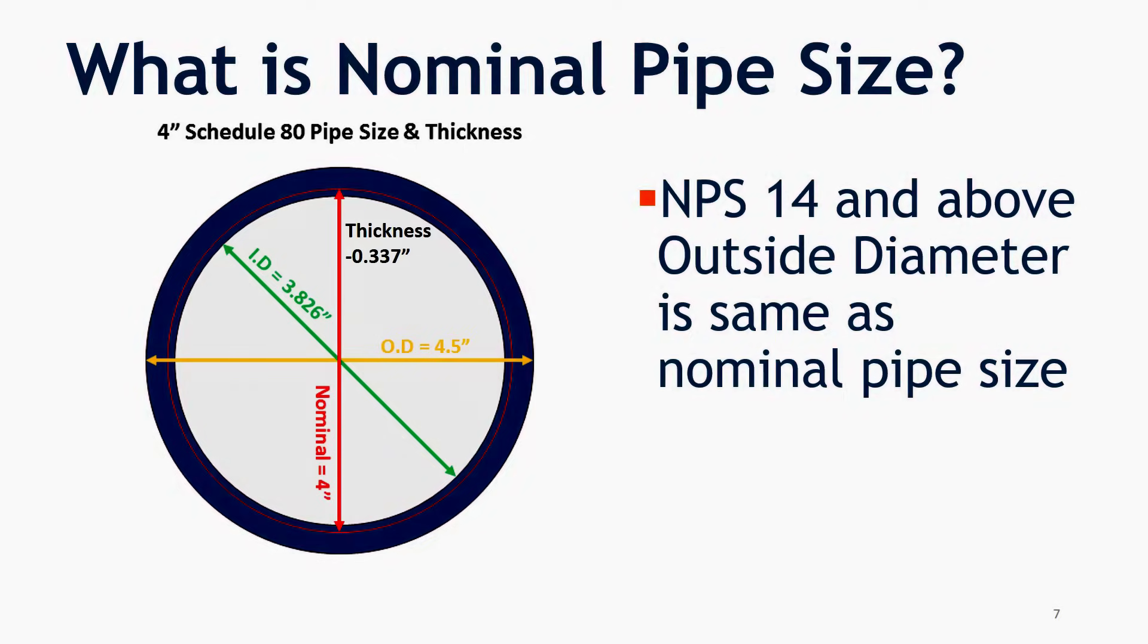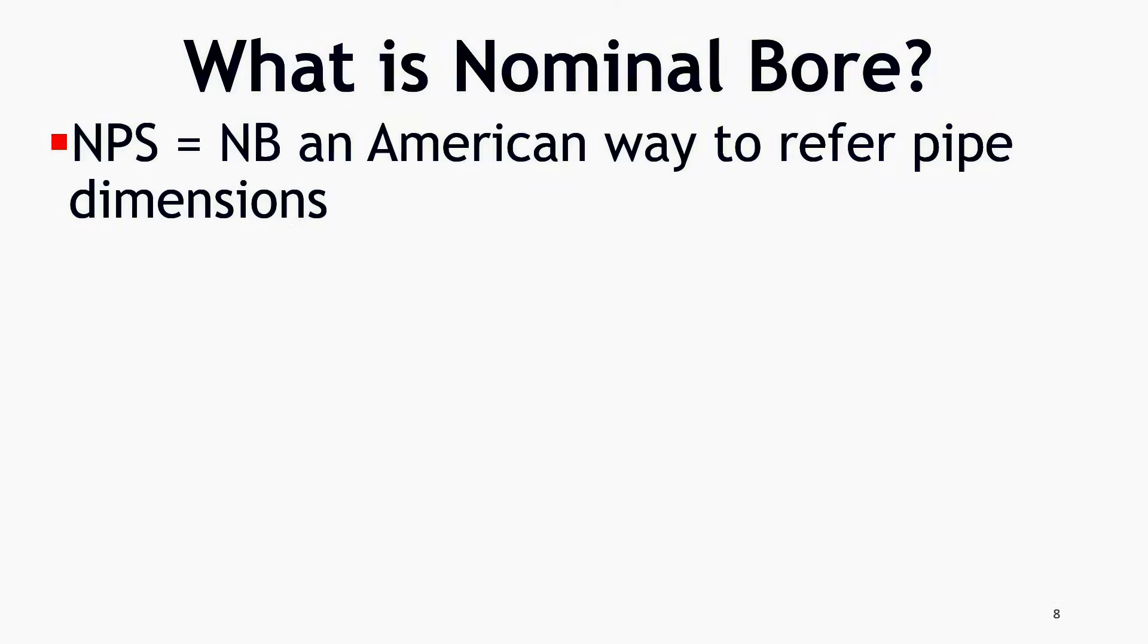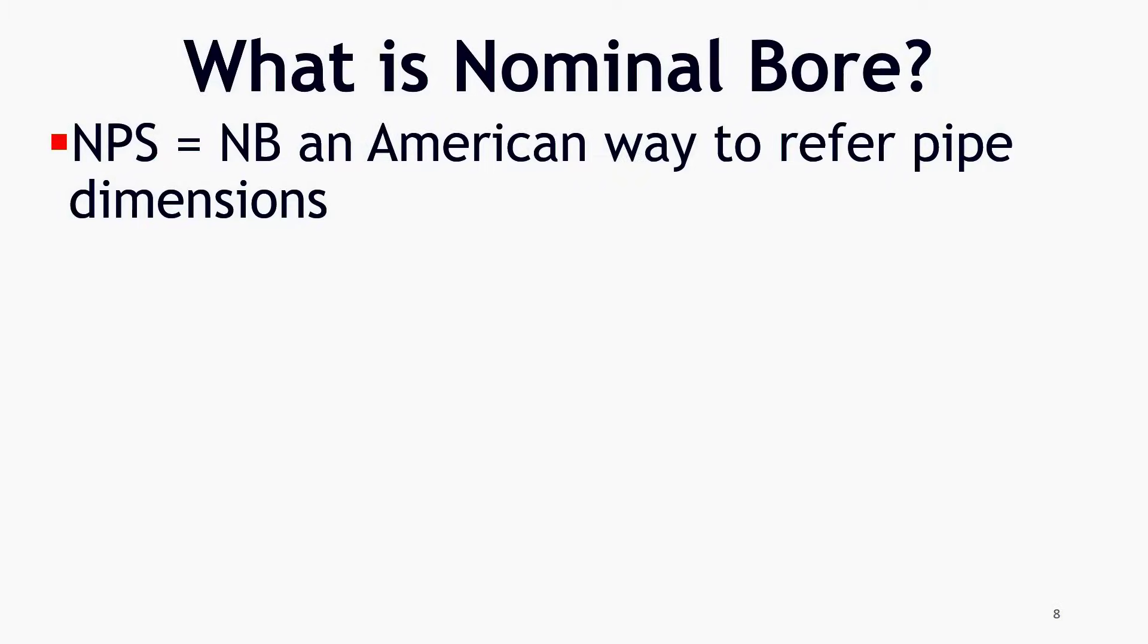What is nominal bore? NPS is frequently referred as NB or nominal bore. As such, there is no difference between NB and NPS. NB is also an American way to refer to a pipe dimension. I have also seen that people use NB and DN interchangeably.